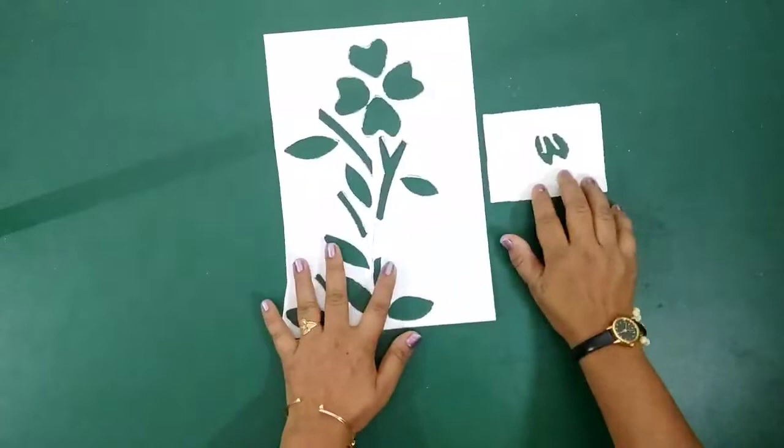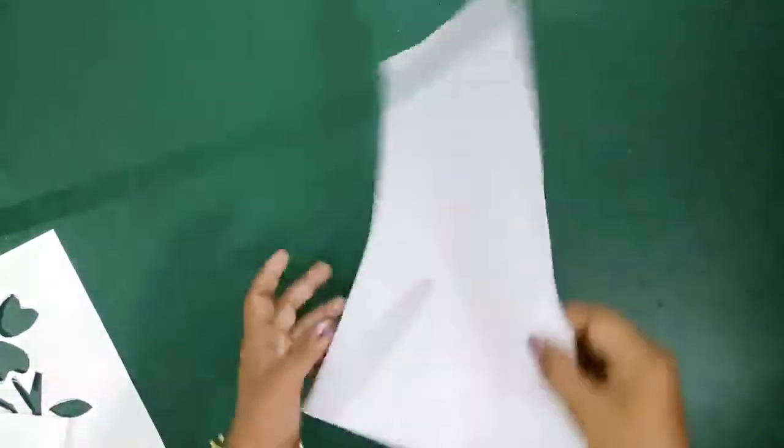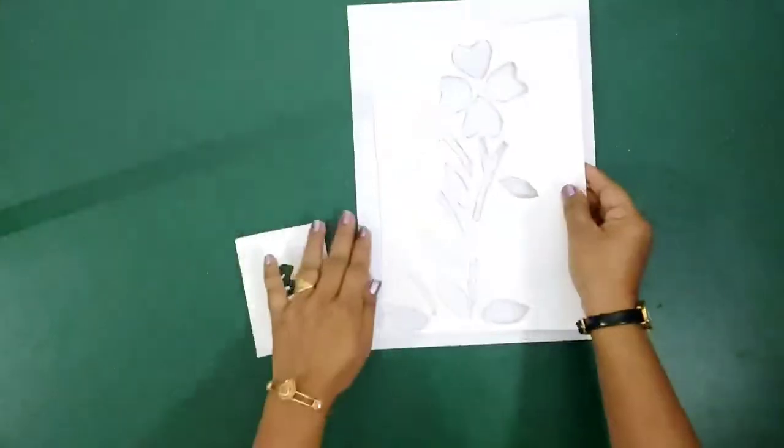Our stencil is ready. I am using one more cutout for the flower. Now take a sheet of paper and place the stencil over it.